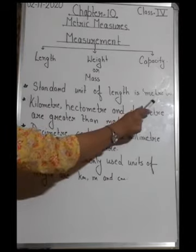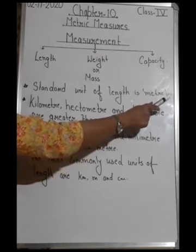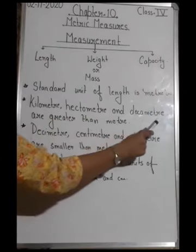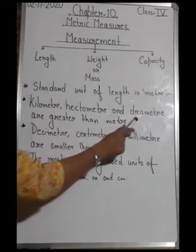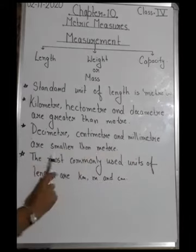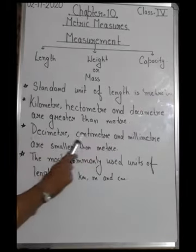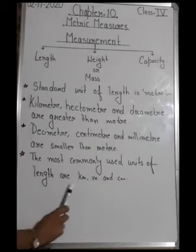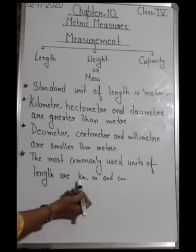We will also learn the conversion of units. So first we are going to learn the measurement of length. The standard unit of length is meter. To measure the length of any object, the standard unit we use is meter, and in short, meter is written as 'm'. There are some more units of length: kilometer, hectometer, and decameter. These units are greater than the standard unit, that is meter. The units decimeter, centimeter, and millimeter are smaller than meter.